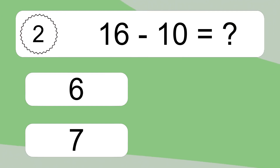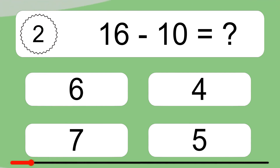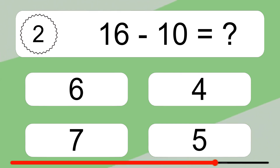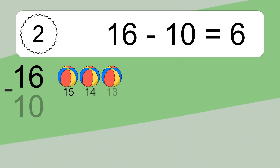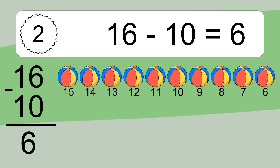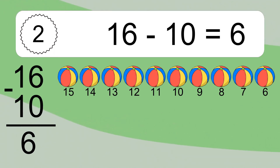16 minus 10 equals what? 16 minus 10 equals 6. Let's count it: 15, 14, 13, 12, 11, 10, 9, 8, 7, 6.